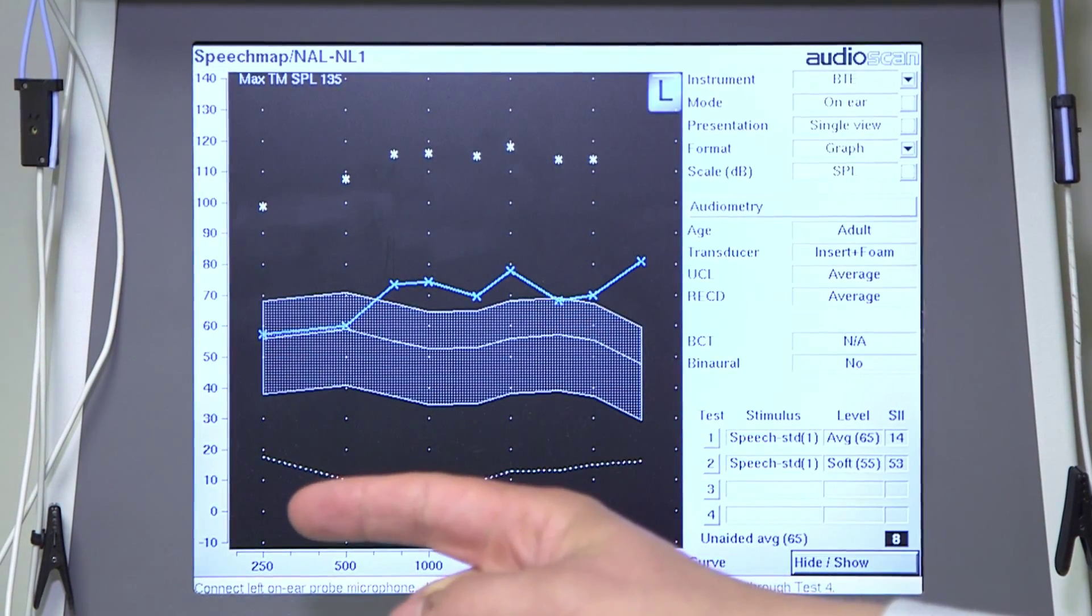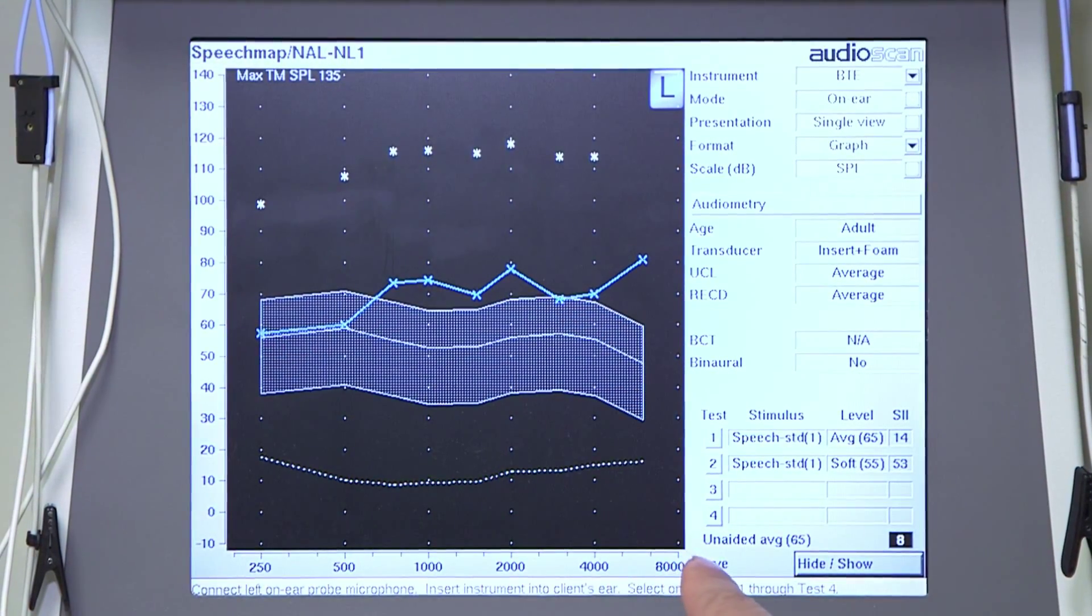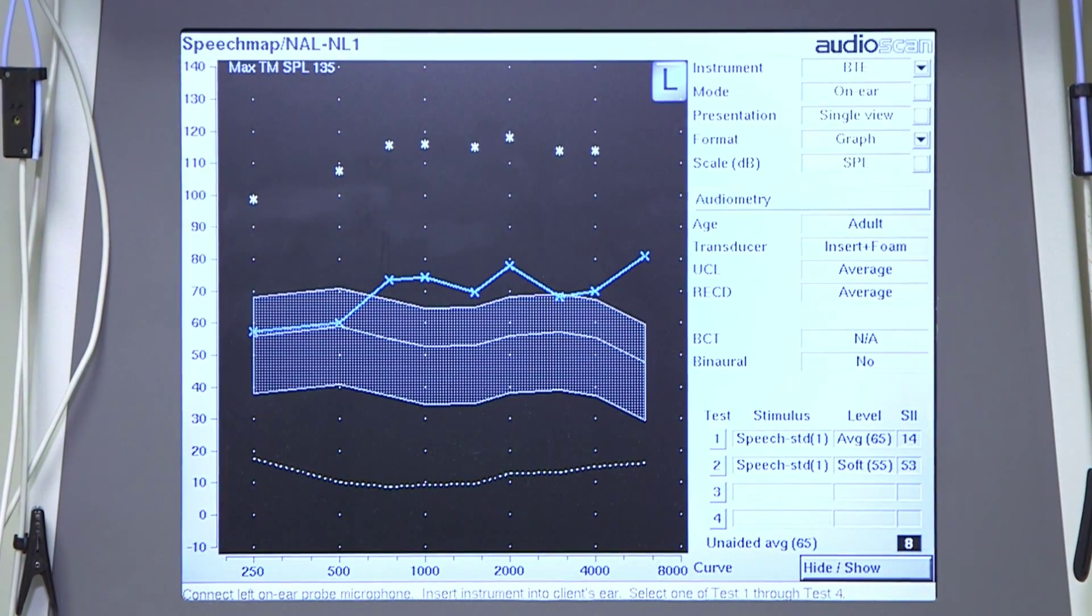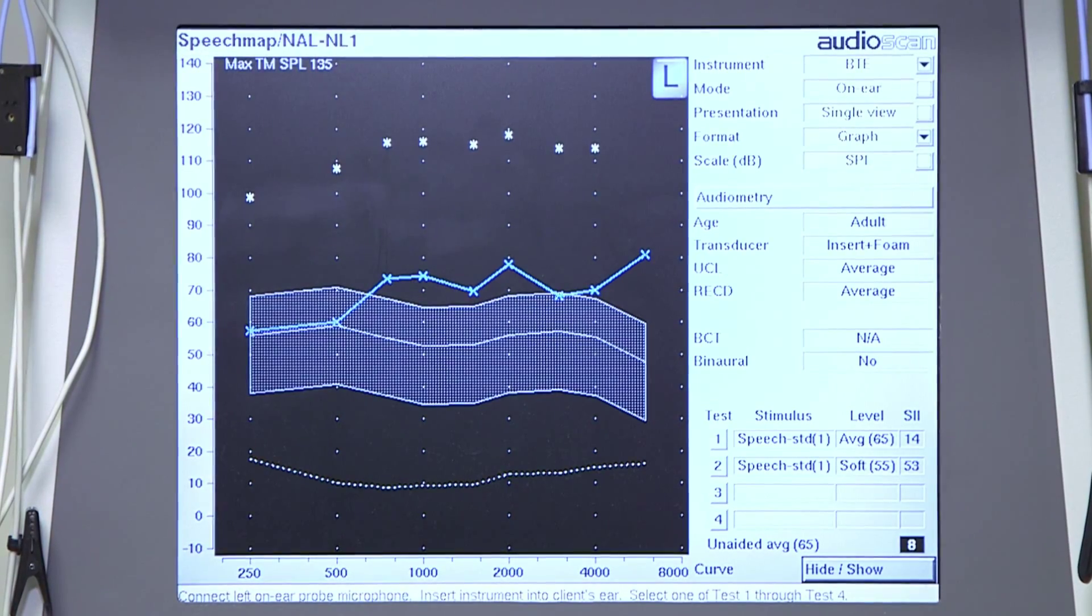Lower pitch sounds are shown to the left and then higher pitch sounds are shown to the right. And then volume is shown by going up on the graph, so louder sounds are higher on the figure.